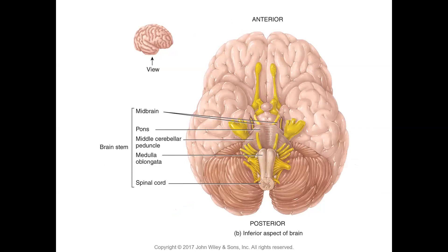This is the inferior aspect of the brain — a model showing the inferior view. As the spinal cord ascends, you can see why the medulla oblongata gets its name: it has an oblong appearance. Here we see the middle cerebellar peduncle, the pons as these bulges, and then the midbrain. From the medulla oblongata to the midbrain is your brain stem. The spinal cord is not part of the midbrain.